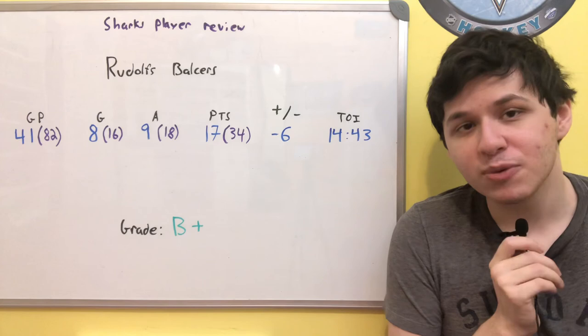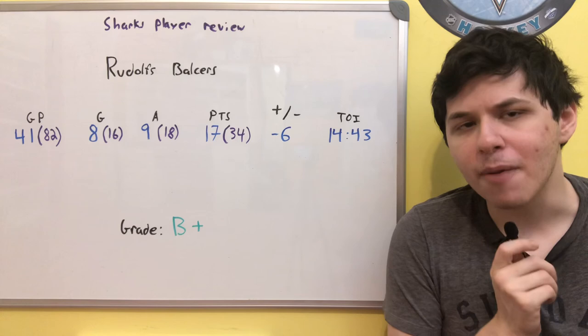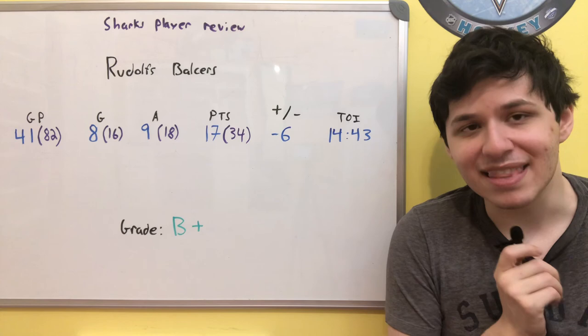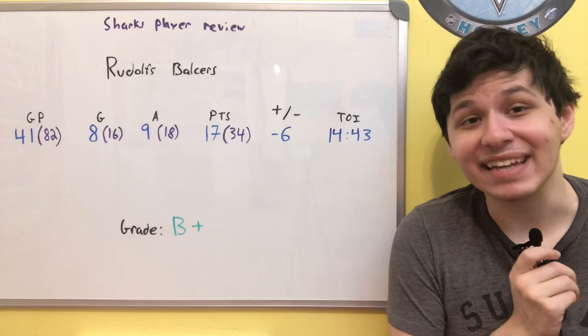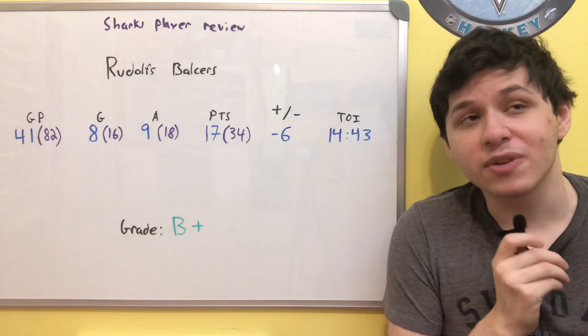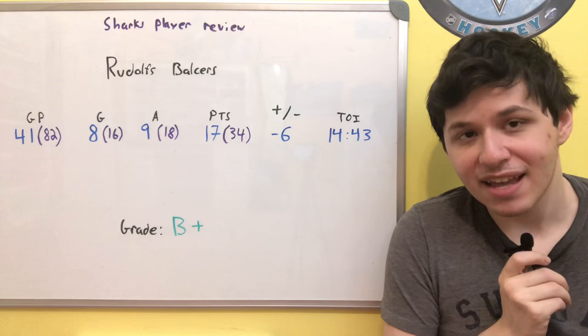And when we take a look at ice time, 14 minutes, 43 seconds, just about in line with what you would expect from a solid third liner, especially when you consider the fact that early on in his season this year, he was playing not a ton of ice time. In just his second game on the year, he ended up getting, I believe, somewhere around eight and a half minutes. And yet, near the end of the season, he played a season-high 19 and a half minutes in one of those games against the Colorado Avalanche. So there was a massive evolution from the start of the season for Rudolfs Balcers to the end of the season. And he could be a very effective forward for the San Jose Sharks moving into the future.